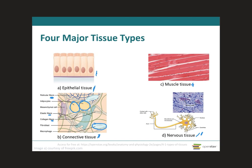Epithelial tissue and most types of connective tissue, except cartilage, bone, and blood, are more general in nature and will have a wide distribution in the body. These tissues are components of most body organs and have a wide range of structure and function. We will look at epithelial tissue and connective tissue in some detail in this module, and the muscular and nervous tissues will be covered in a separate module later on in the semester.